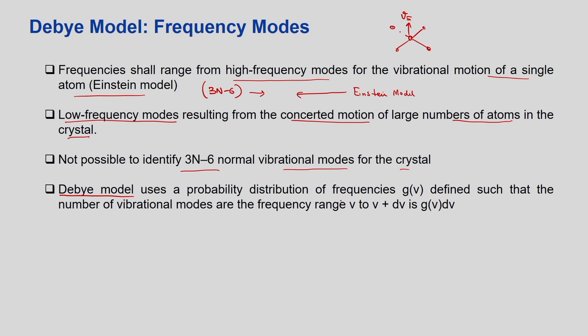The low frequency modes result from concerted motion - simultaneous motion of large numbers of atoms in the crystal. It is not possible to identify all 3N minus 6 normal vibrational modes of the crystal. That is where the Debye model comes into the picture. The Debye model uses a probability distribution of frequencies. Instead of having an absolute frequency, you define a probability distribution g(V) such that the number of vibrational modes in the frequency range V to V+dV is given by g(V)·dV. So the integral of g(V)dV from 0 to infinity equals 3N minus 6.